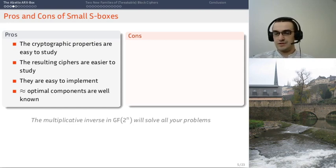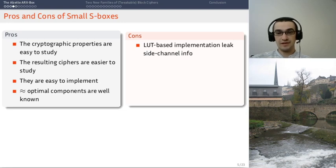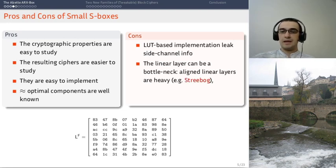So it's a solved problem to some extent. Not everything is perfect though. If you are implementing your s-box using a lookup table, then you're going to have problems with side-channel attacks. And in order to use a small s-box, you need to have a linear layer which provides strong diffusion.